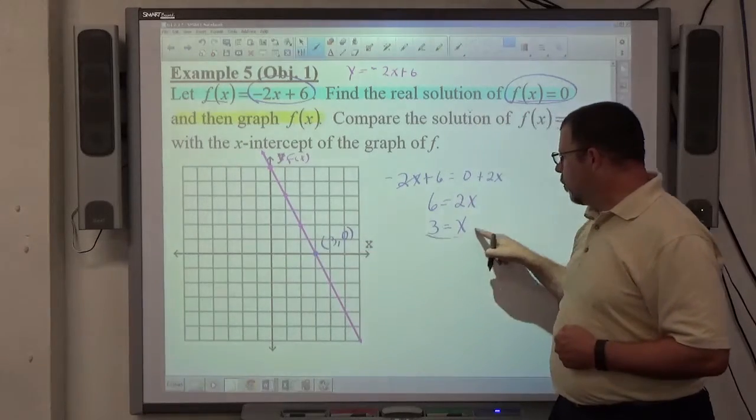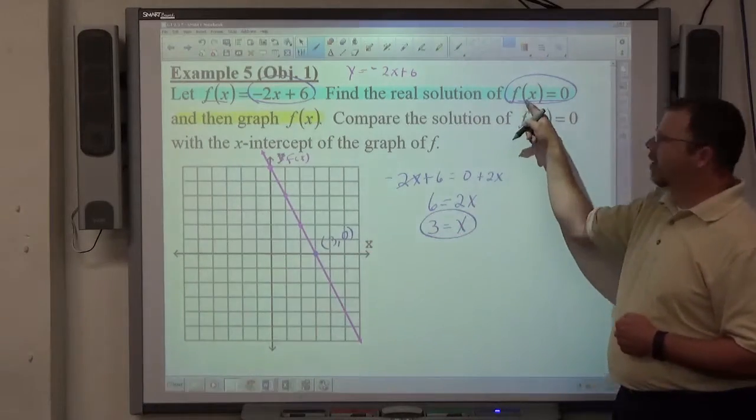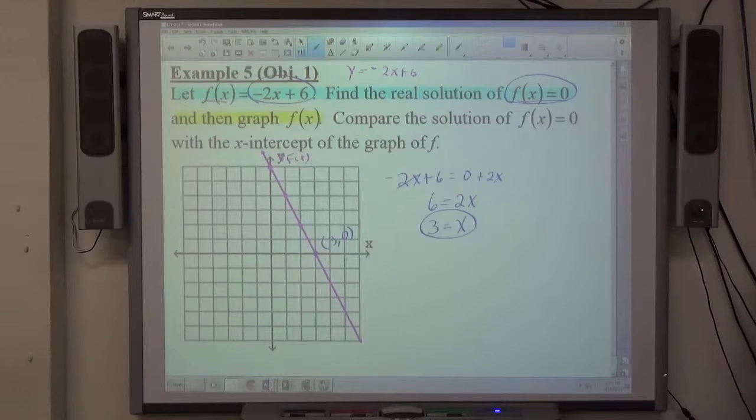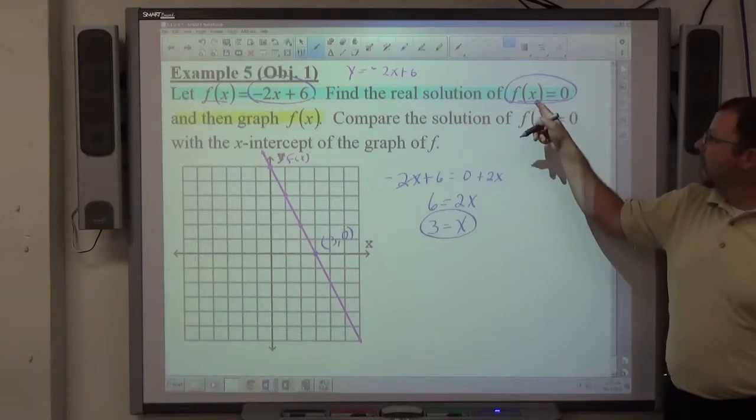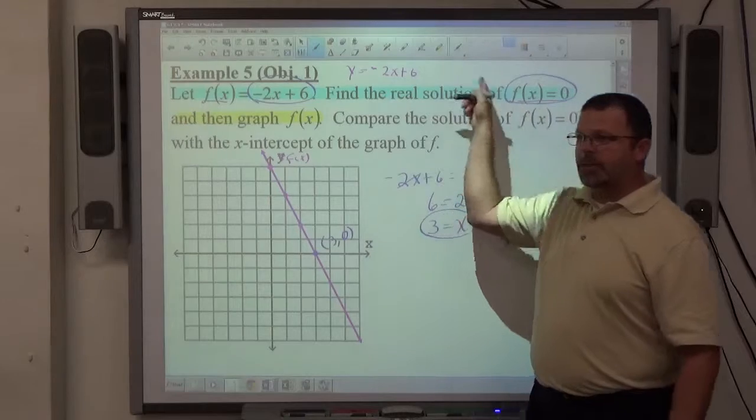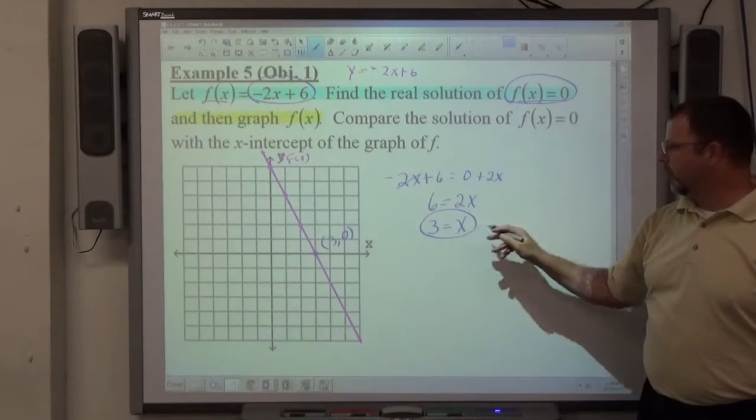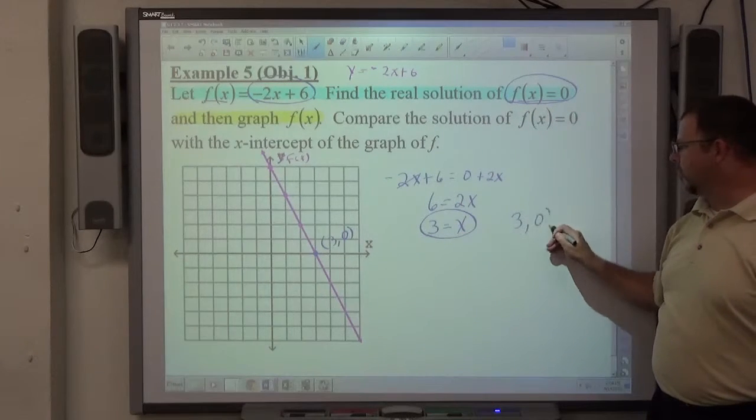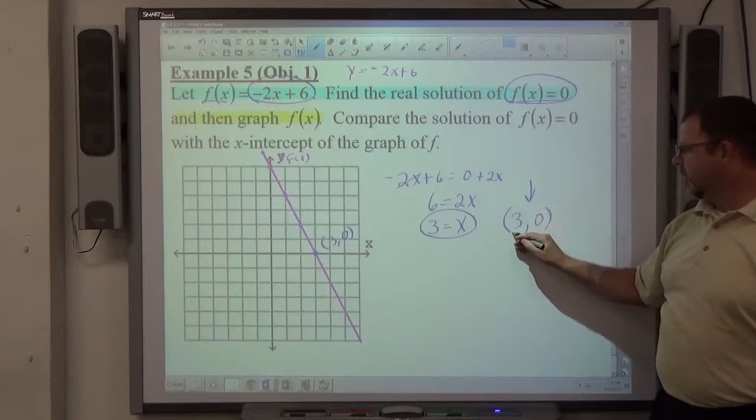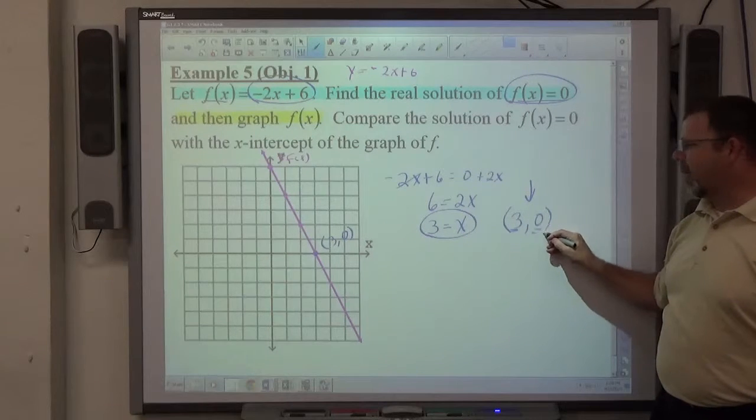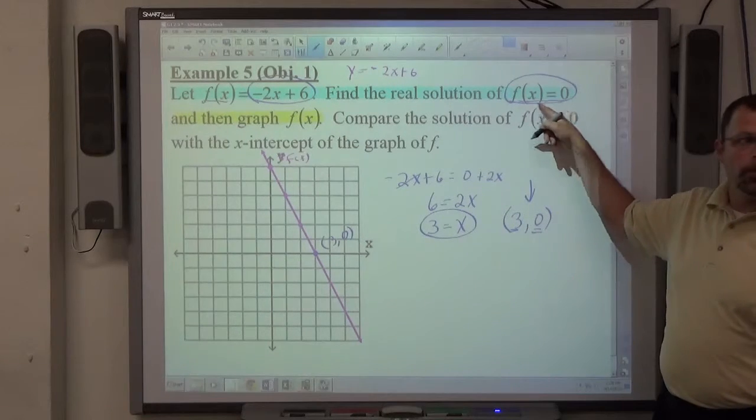So the x intercept is equivalent to the place where the function's value is 0. That's not a coincidence. That should always happen. Because if f of x equals 0 and y is f of x, and x equals 3 when y equals 0, it creates an ordered pair. The x value you found paired with the value of y equals 0 because that's what y equals right there.